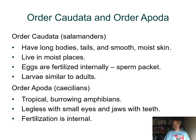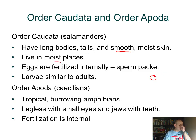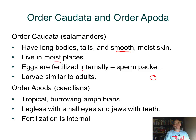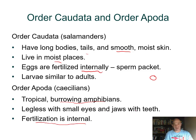The order Caudata includes salamanders, which have long bodies, tails, and smooth moist skin. Interestingly, their eggs are fertilized internally: the male leaves a sperm packet behind, the female positions her cloaca—the common opening for the digestive, urinary, and reproductive systems—over it and picks up the sperm packet. In the Apoda, the tropical burrowing caecilians have no legs, very small eyes, and a jaw with teeth. Fertilization is also internal by the same sperm-packet method.